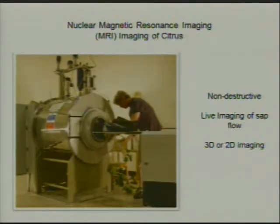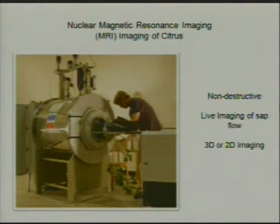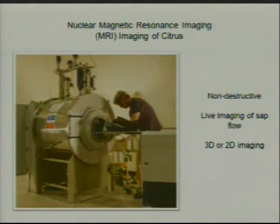In addition to the high-resolution CAT scan, I've been developing MRI to look at citrus. One advantage of MRI is that it's non-destructive, and we can look at the flow rates — the velocity — of either xylem or phloem in real time in a real plant. It's basically a shrunken-down version of a medical MRI. You lay the plant on the bed and roll it into the magnet. We can do live imaging of sap flow velocity — whether xylem or phloem — and also 2D and 3D imaging.